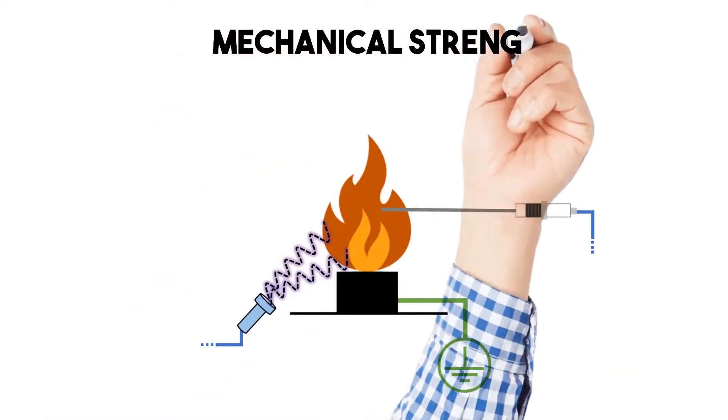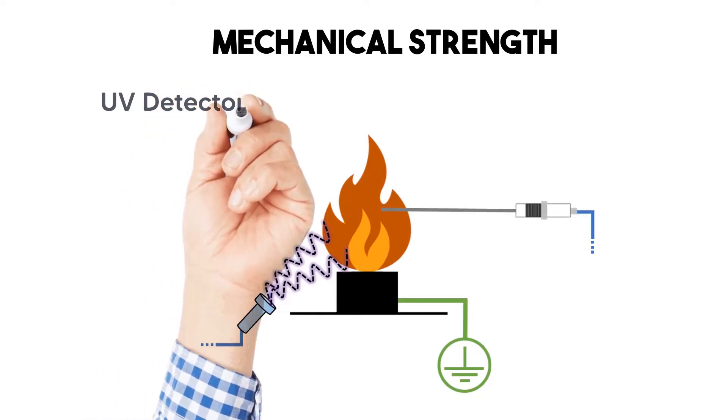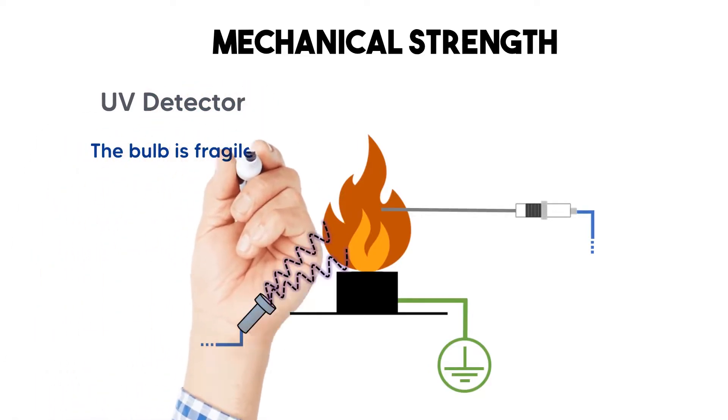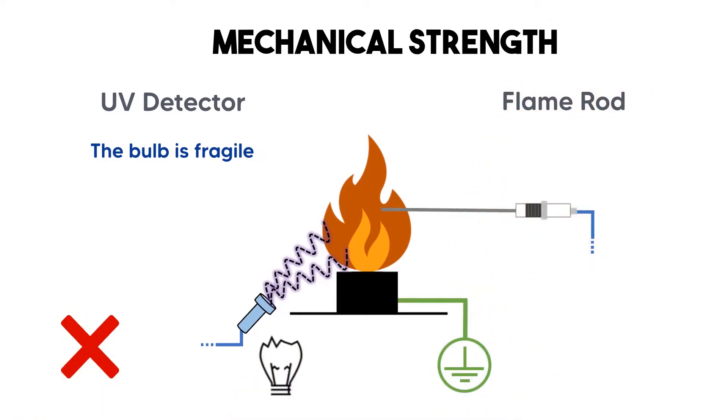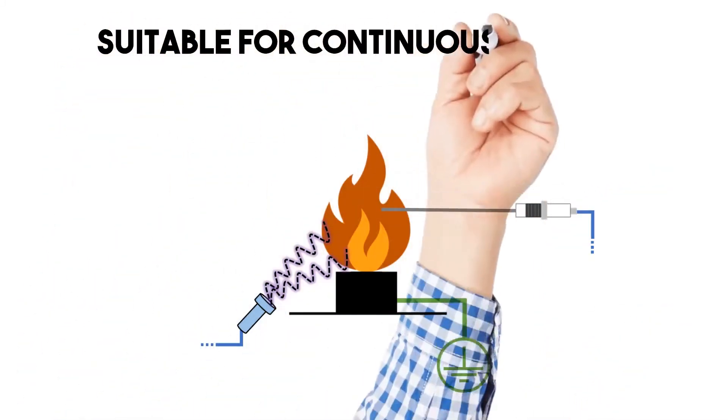Mechanical strength. The UV detector bulb is fragile. It is made of glass and can be damaged. The flame rod is robust since it has no electronic components, suitable for continuous operation.